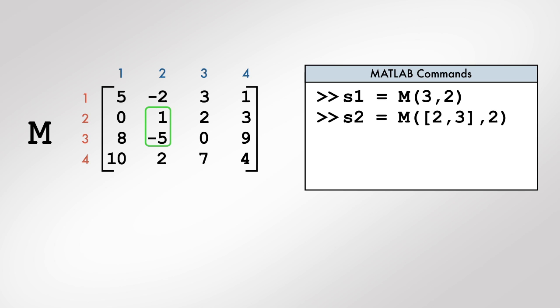In situations where we want to extract elements from a sequence of rows in a matrix, instead of entering all the row numbers, we can create the row index using the colon operator. In this case, 2 colon 4 will create a vector with elements 2, 3, and 4.